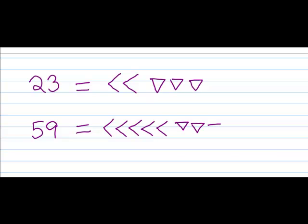And so here we have 23 would be the same as 2 tens and 3 ones. 59 would be 5 tens and 9 ones. You could write all 9 ones out in a line if you want, or you can kind of group them together. The important thing is you have 9 ones.